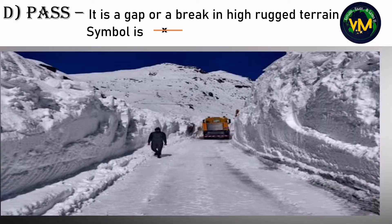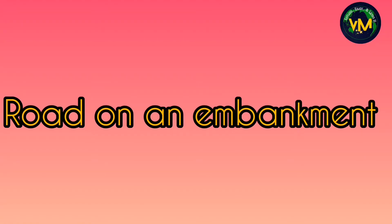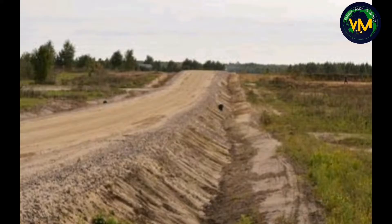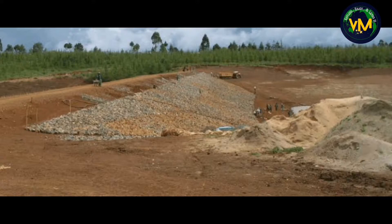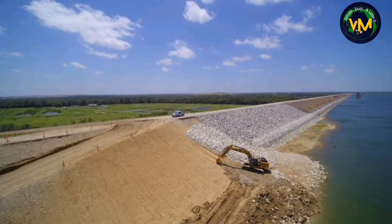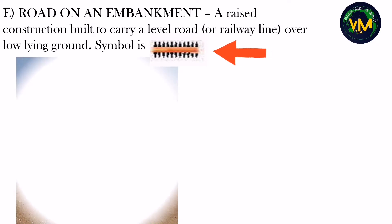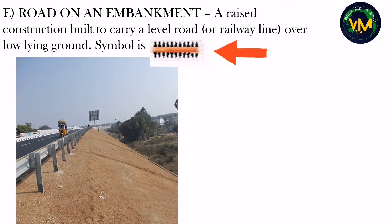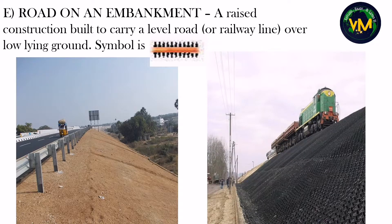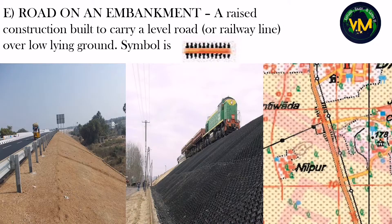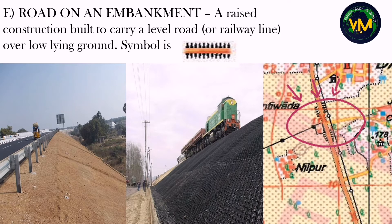This is a picture of a pass — it is a gap or a break in a high terrain. The symbol for a pass is a black color X mark on the road. Road on an embankment: usually in low-lying land, when they want to raise the height of the road so that it can be used for transport even during the rainy season, a raised construction is built to carry a road or a railway line. You can see the black lines on either side of the state highway — they indicate an embankment.